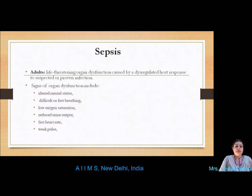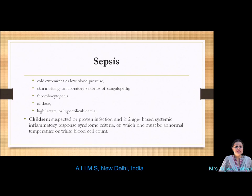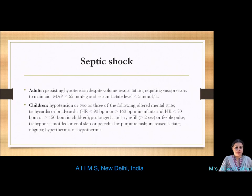Sepsis is a life-threatening organ dysfunction caused by a dysregulated host response to suspected or proven infection. Signs of organ dysfunction include altered mental status, difficulty or fast breathing, low oxygen saturation, reduced urine output, fast heart rate, weak pulse, cold extremities or low blood pressure, skin mottling, thrombocytopenia, acidosis, high lactate, or hyperbilirubinemia. Septic shock is defined by persistent hypotension despite volume resuscitation, requiring vasopressors to maintain mean arterial pressure above 65 mmHg, with serum lactate above 2 mmol/L.